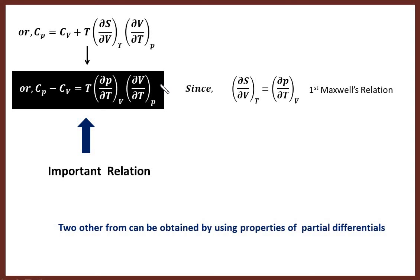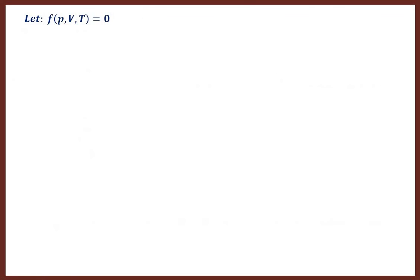There are two other different forms of Cp minus Cv that can be obtained by using properties of partial differentials. Let p, v, t be related to each other by a function f. So we can write f as a function of p, v, t.